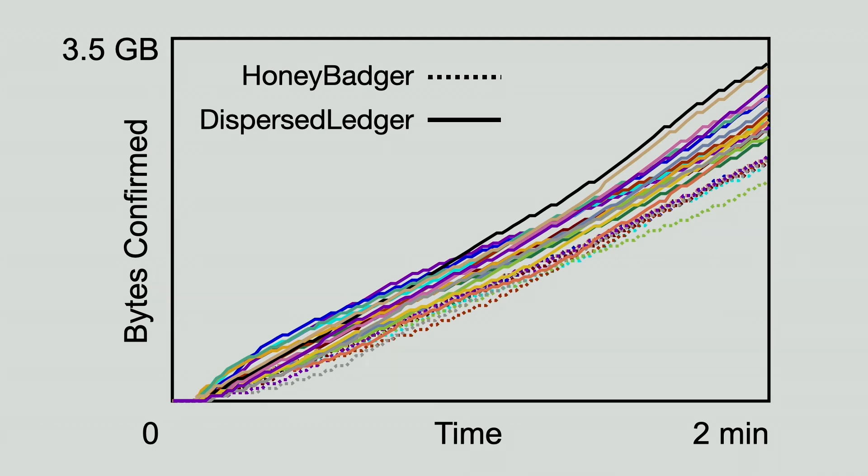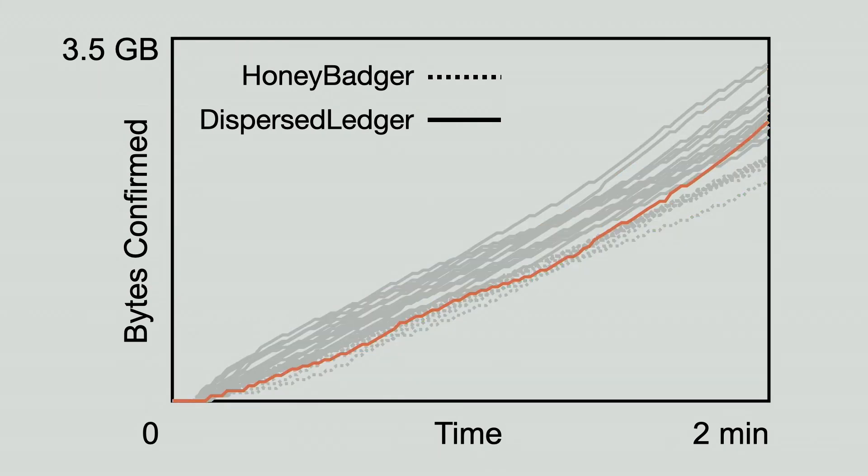Instead, we see that Honey Badger is troubled by temporal variability. The slow nodes could vary epoch by epoch, but in any epoch, Honey Badger is bottlenecked by the slow nodes at that particular moment. In comparison, Dispersed Ledger absorbs this variability by enabling nodes to lag behind and catch up later when their bandwidth recovers. It becomes clear if we highlight one of the curves. Notice that this node had the least progress initially, but it quickly caught up towards the end.